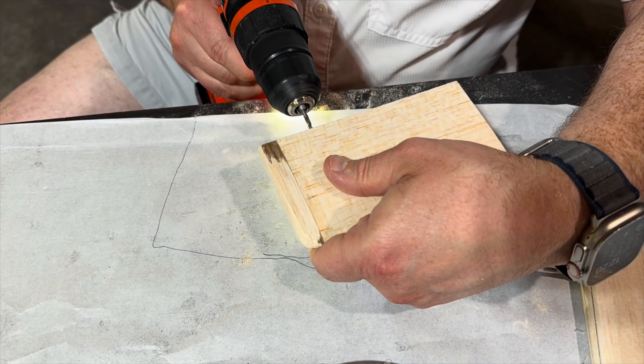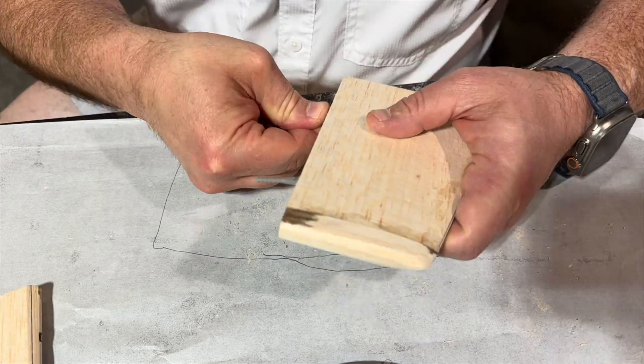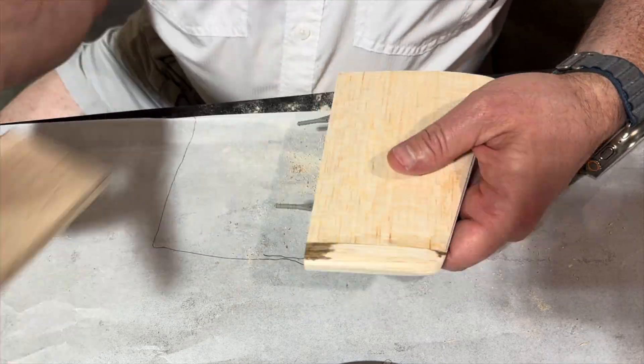Now, even though the hinge pockets are laser cut, you're going to want to open them up to 1 1/8 inch in order to properly fit those robart hinges.